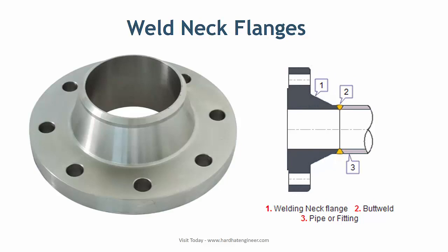Weld neck flanges are the most widely used flanges in process piping. They give the highest level of joint integrity due to the butt weld connection with the pipe. This type of flange is used in high pressure and temperature applications. Weld neck flanges are bulky and costly with respect to other types of flanges.